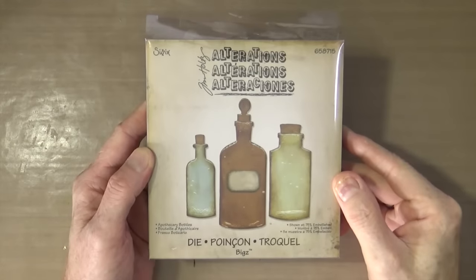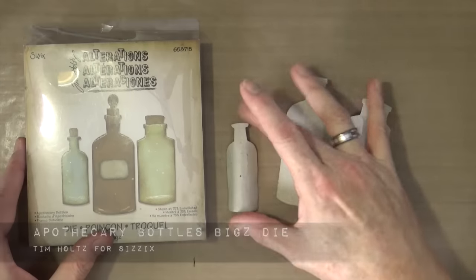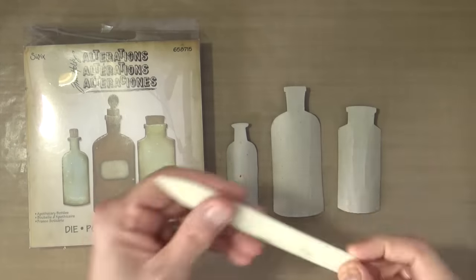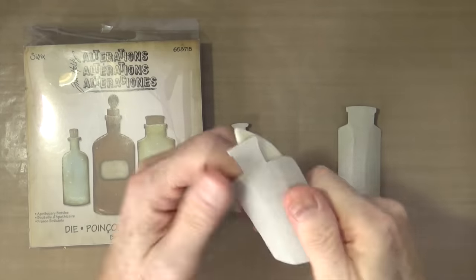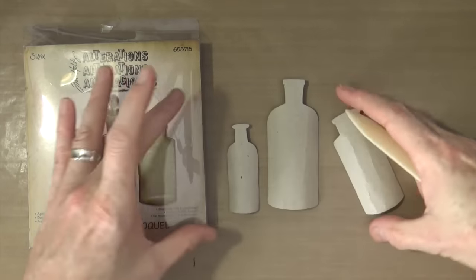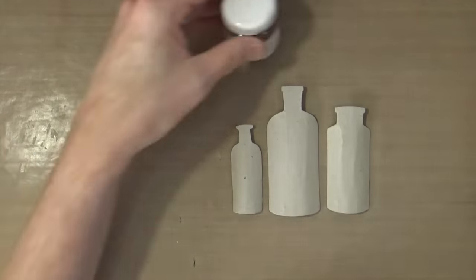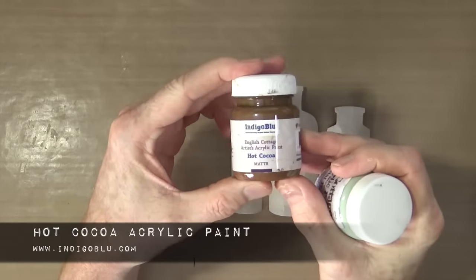To create the first set of embellishments for my canvas, I'm using the apothecary bottles Bigz die from Tim Holtz and Sizzix. I've already run it through my big shot and cut it out of a piece of grey grunge board. Now I'm going to paint each one of the bottles.